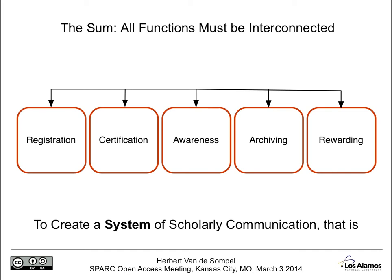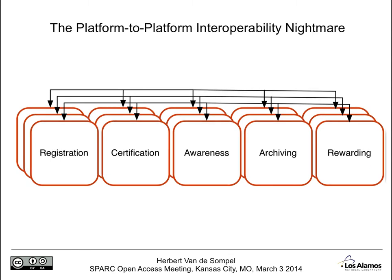This is a rather important and significant problem, because what I've shown so far are just abstract boxes depicting the functions of scholarly communication. The reality is that in the implementation of each of these functions, several platforms are involved. So information needs to flow across the platforms that implement each of these functions. One can try to achieve that by means of platform-to-platform interoperability — going one by one and specifying how system A and system B will interoperate, and so on. But that is not going to be a scalable proposition because there are way too many systems involved.